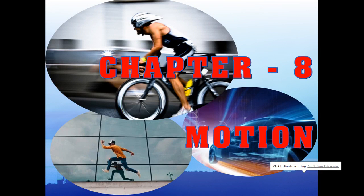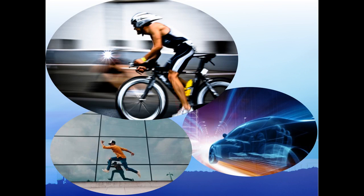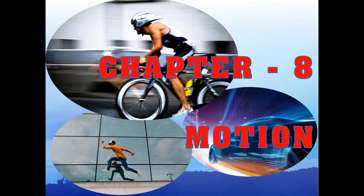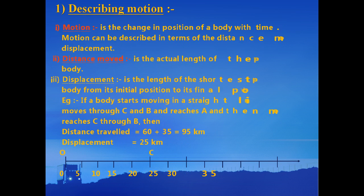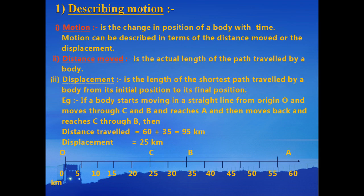Dear students, welcome. This is the second part in which we are discussing motion — Class 9th Science, Chapter 8. When we talk of motion, we discuss what motion is: it is the change in position of an object with time. Motion can be described in terms of the distance moved or the displacement, which we have already discussed in the first presentation, but we will just take a brief recap.